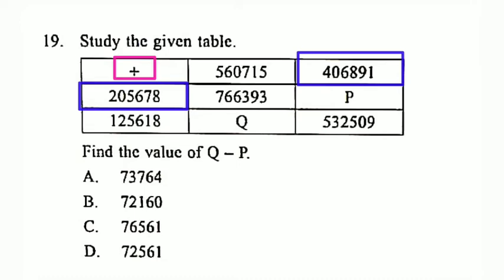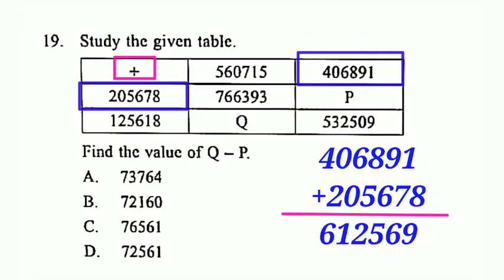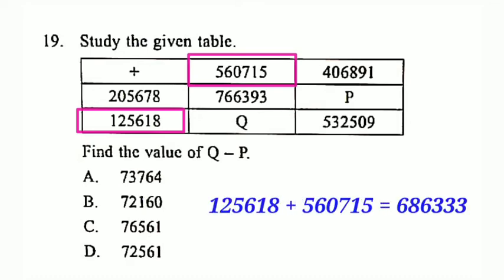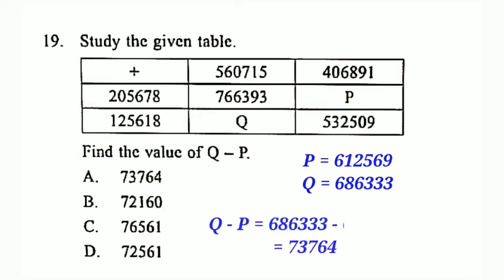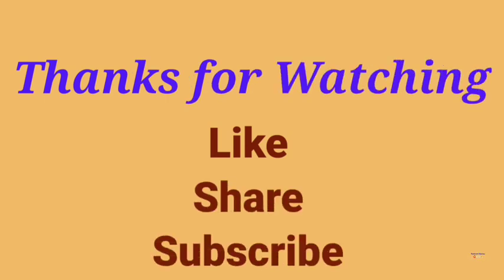Because the plus sign is given, P equals 406,891 plus 205,678, which equals 612,569. Similarly, Q equals 125,618 plus 560,715, which equals 686,333. The question asks for Q minus P. Subtracting 612,569 from 686,333, we get 73,764. So option A is correct: 73,764. Thanks for watching. Please like, share, and subscribe to the channel.